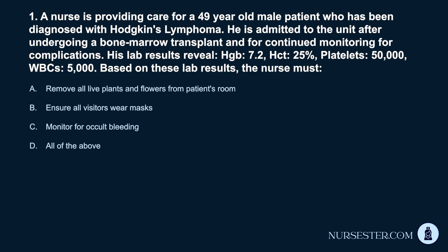Question 1. A nurse is providing care for a 49-year-old male patient who has been diagnosed with Hodgkin's lymphoma. He is admitted to the unit after undergoing a bone marrow transplant and for continued monitoring for complications. His lab results reveal hemoglobin 7.2, HCT 25%, platelets 50,000, WBCs 5,000. Based on these lab results, the nurse must: a. Remove all live plants and flowers from the patient's room. b. Ensure all visitors wear masks. c. Monitor for occult bleeding. d. All of the above.